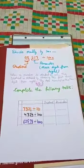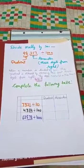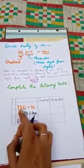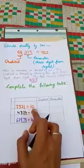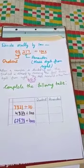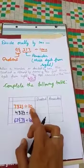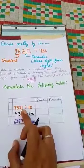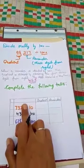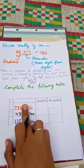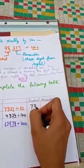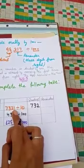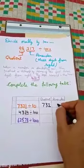Now let us start worksheet number 5. Complete the following table. Divide 7321 by 10. We know that when a number is divided by 10, the quotient is obtained by removing the first digit from the right. So the quotient is 732 and the digit removed is the remainder. So remainder is 1 here.